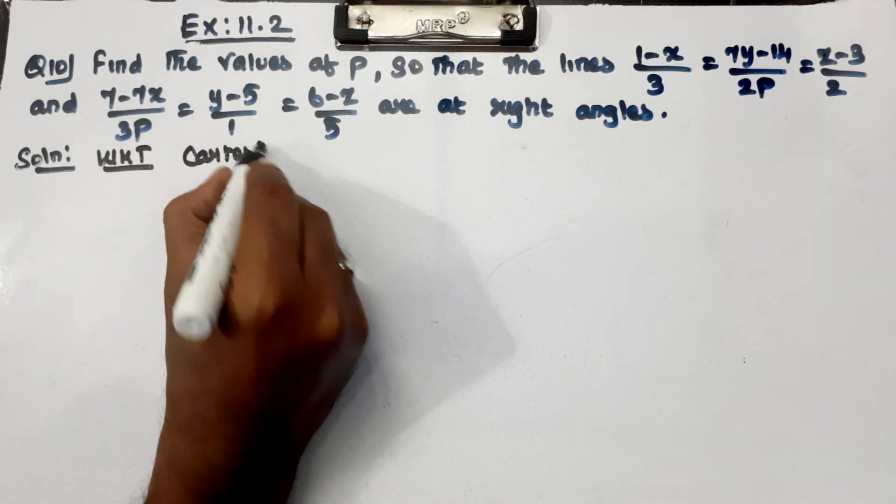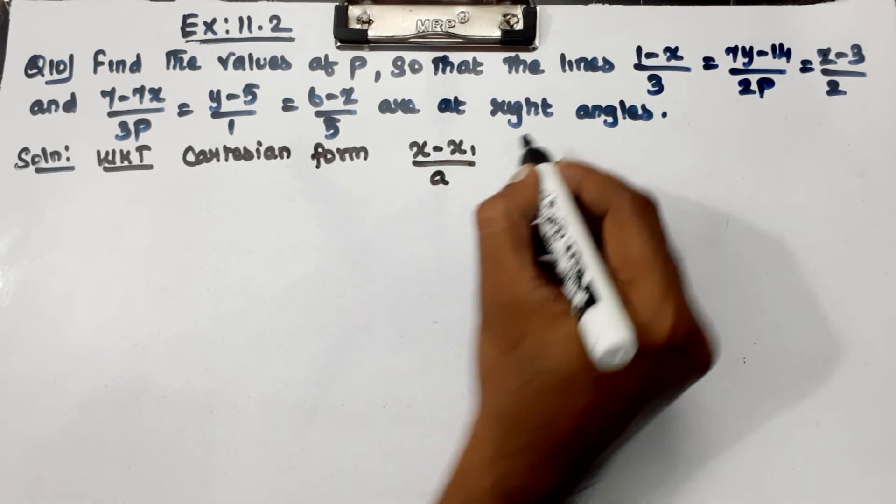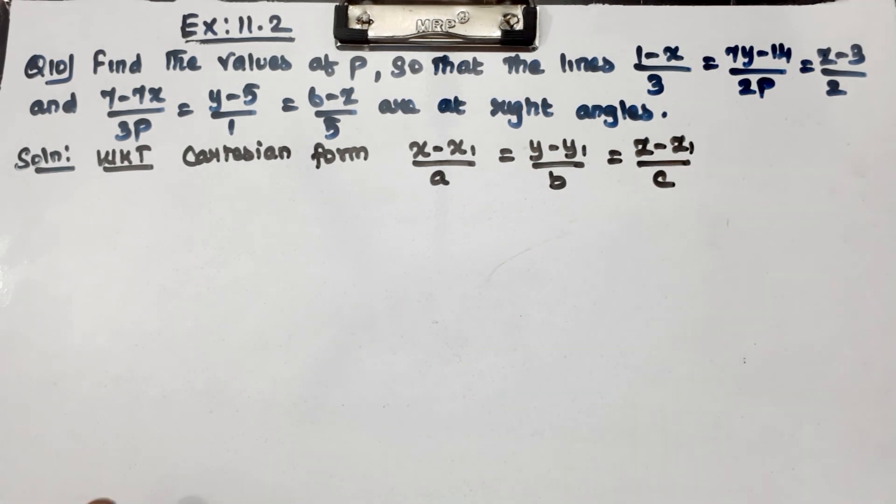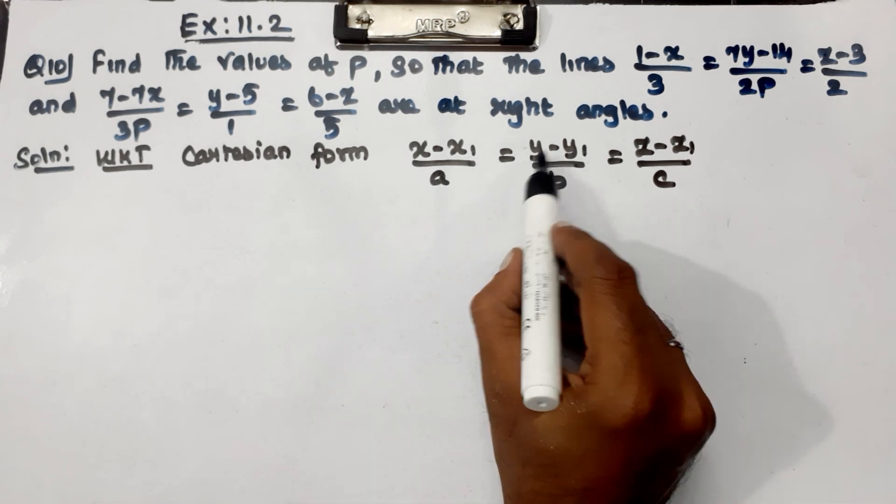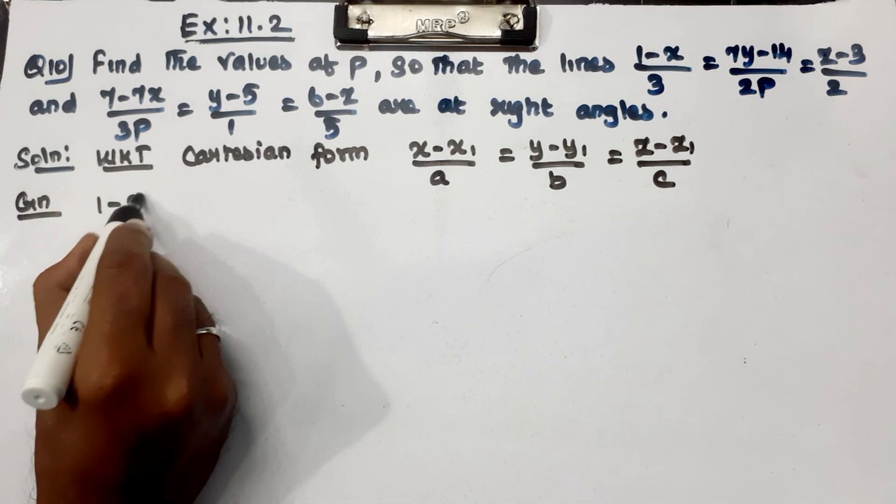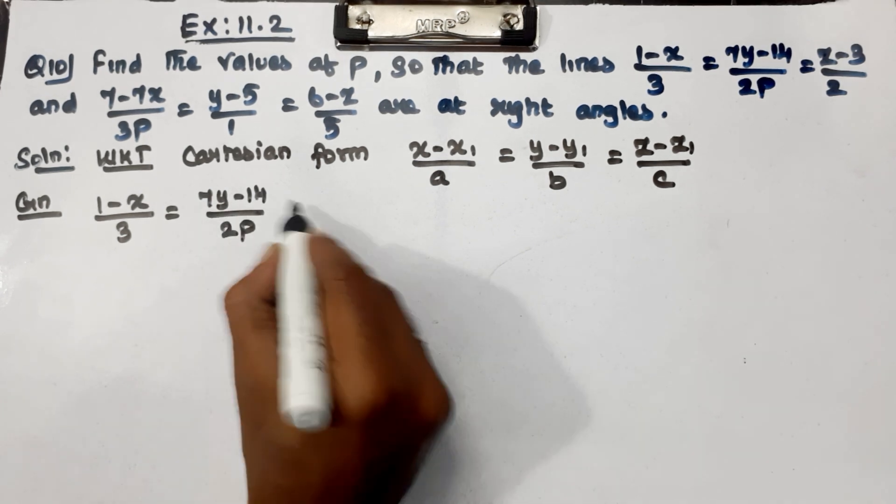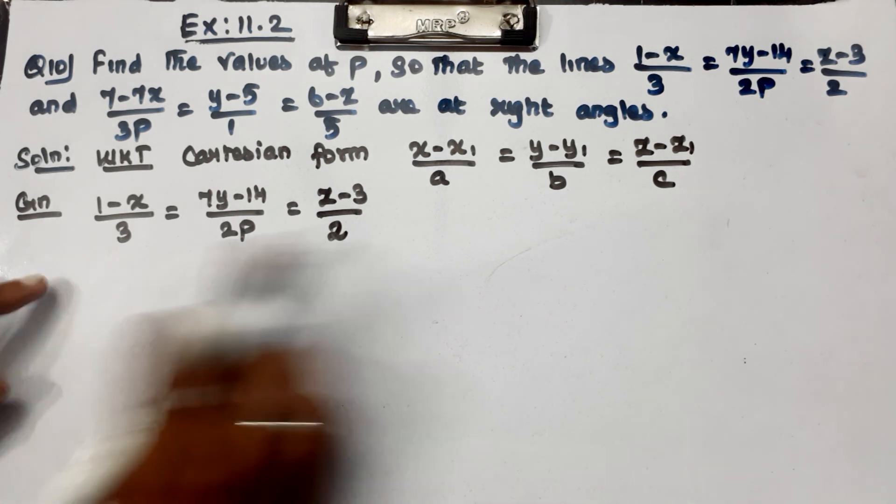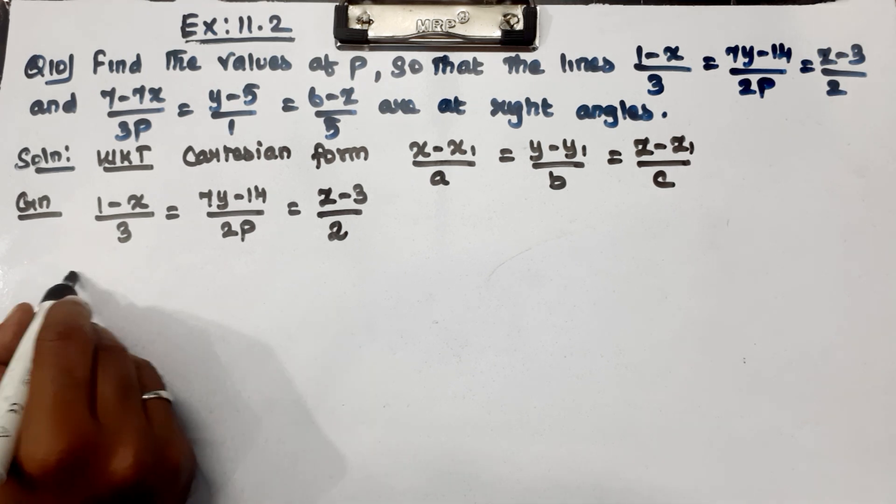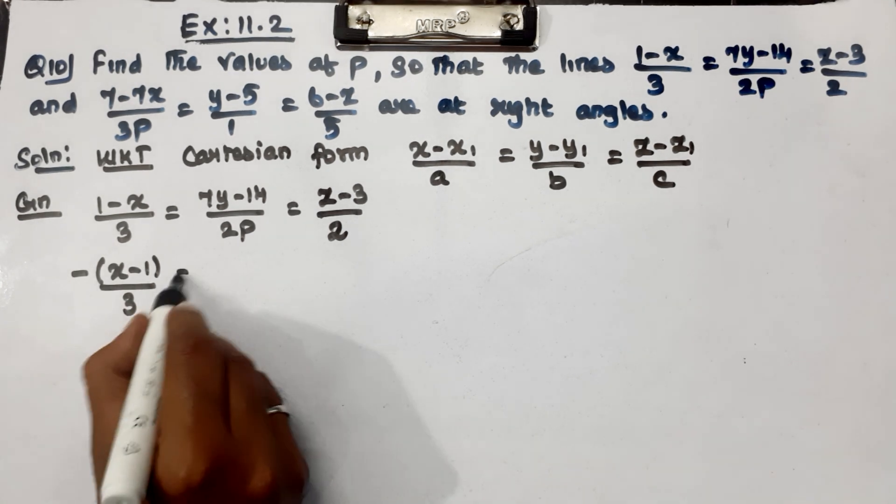Cartesian form. We know if we have this form, x minus x1 over a equal to y minus y1 over b equal to z minus z1 over c. Given, how do we get the first equation? 1 minus x by 3 equal to 7y minus 14 by 2p equal to z minus 3 by 2. This is in this model.